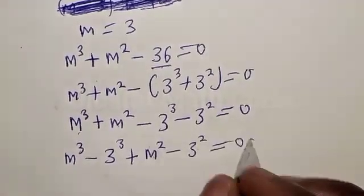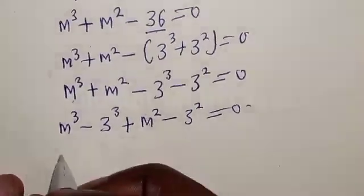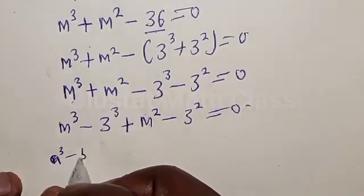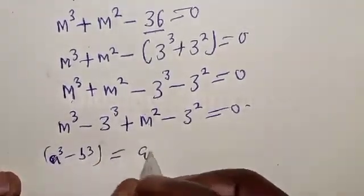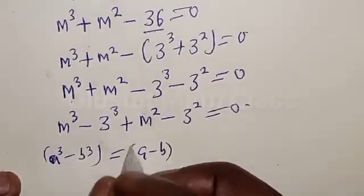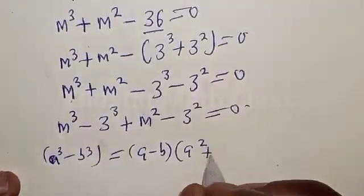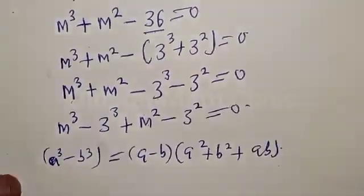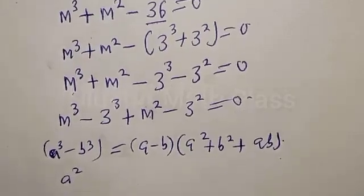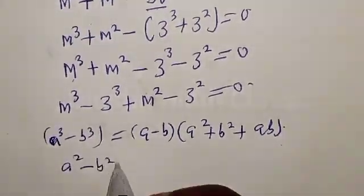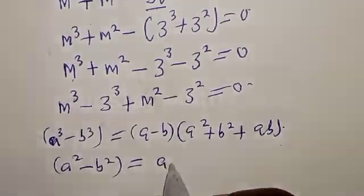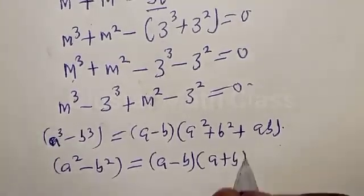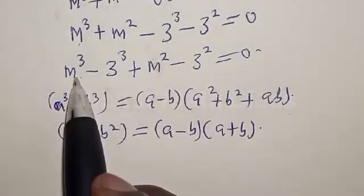Now remember: if you have a cubed minus b cubed, it equals a minus b times a squared plus b squared plus ab. Also, if you have a squared minus b squared, it equals a minus b times a plus b. We will use these identities to factor our expression.